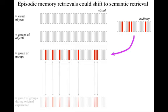Hence, as we observe, damage to the hippocampal system sometimes removes the ability to recall relatively recent events while leaving recall of more distant events intact.